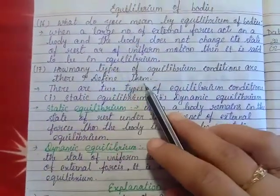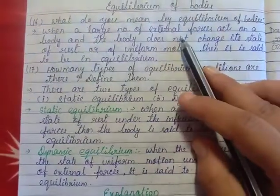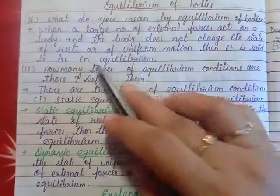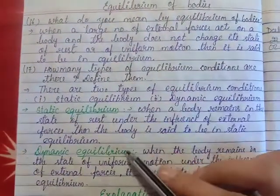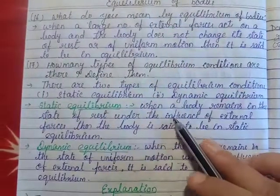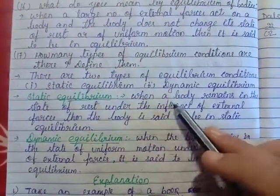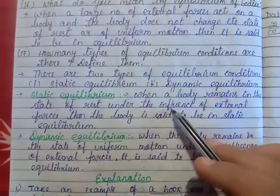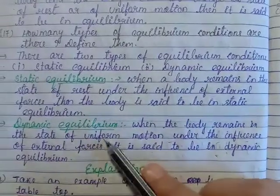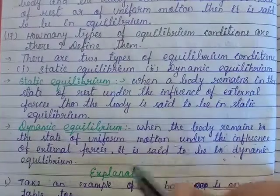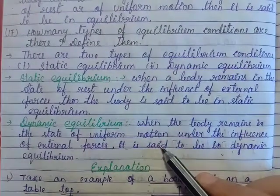Equilibrium conditions are of two types: static equilibrium and dynamic equilibrium. Static equilibrium applies to the state of rest: when a body remains at rest under the influence of external forces, it is called static equilibrium. Dynamic equilibrium applies to uniform motion: when a body remains in uniform motion under external forces and does not stop, that is called dynamic equilibrium.